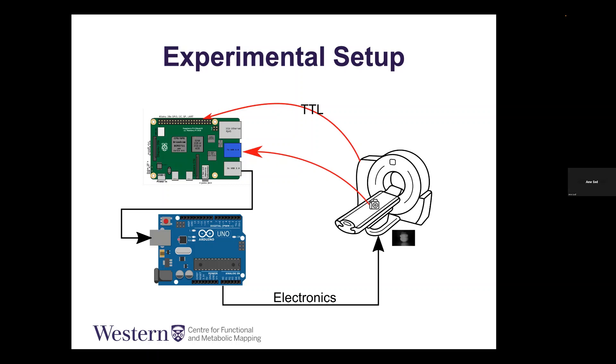The Raspberry Pi also controls the Arduino, and the Arduino controls all the electronics inside the scanner. The Raspberry Pi faces the scanner, receives input from the scanner to know when scanning is starting and ending, and at the same time triggers the Arduino to start the electronics.